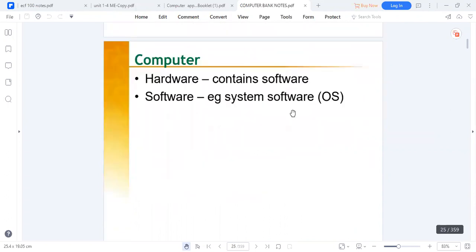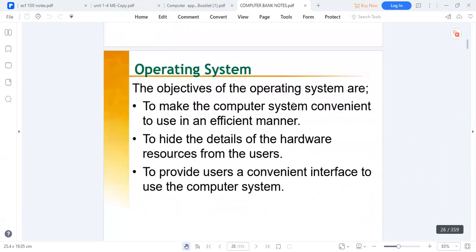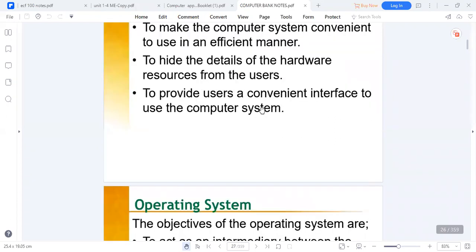The hardware contains the software. The software has the operating system. The operating system has objectives: it makes the computer convenient to use in an efficient manner to hide the details of the hardware resources from the users, and provides a convenient interface to use the computer system.